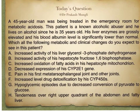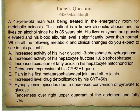Hey everyone, this is Dr. Mungle. Today I am going to explain the answer to one of my questions on chronic alcoholism. A 45-year-old man was being treated in the emergency room for metabolic acidosis. This patient is a known chronic alcohol abuser who has lived on alcohol since he was 35 years old. His liver enzymes are grossly elevated and his blood albumin level is significantly lower than normal. Which of the following metabolic and clinical changes do you expect to see in this patient?